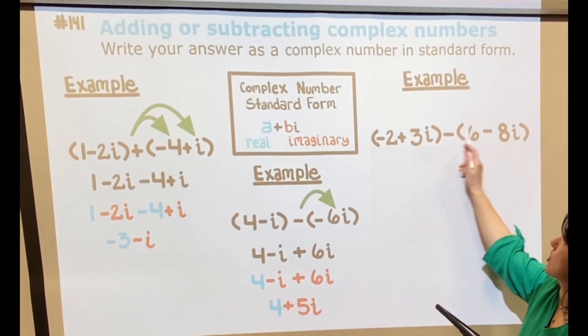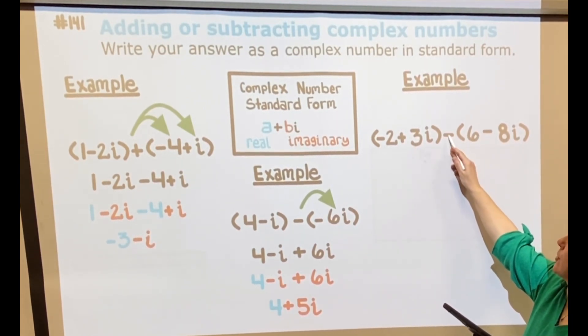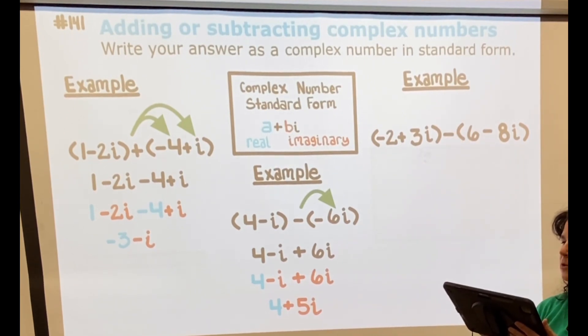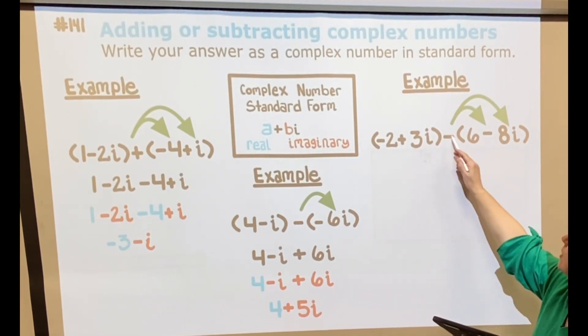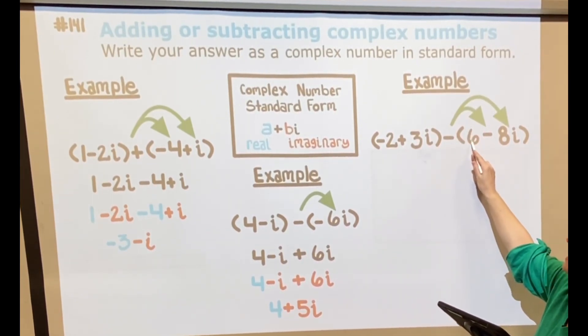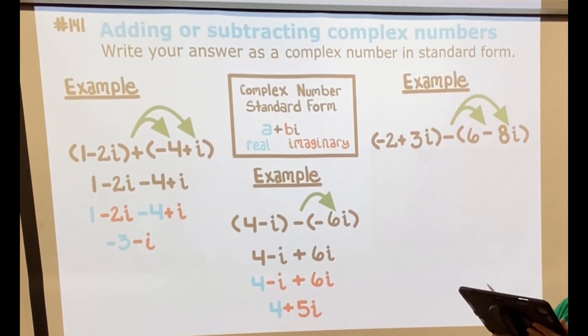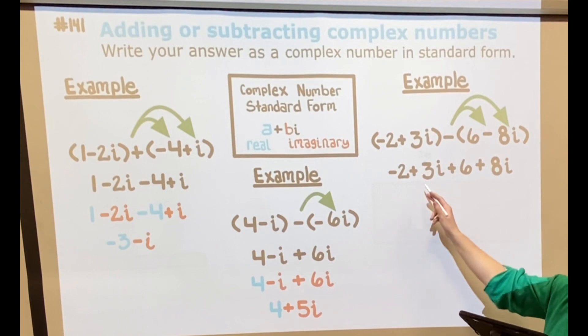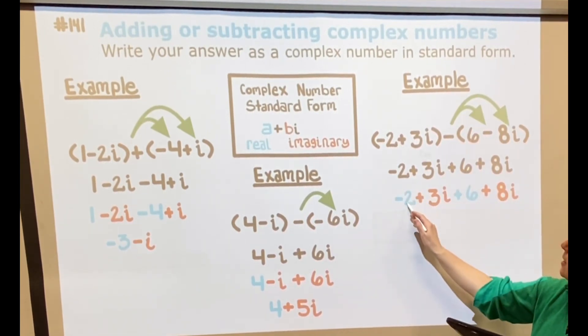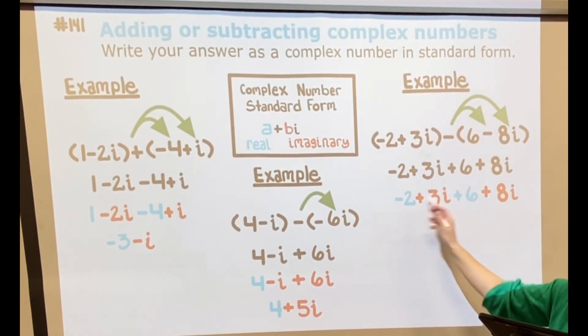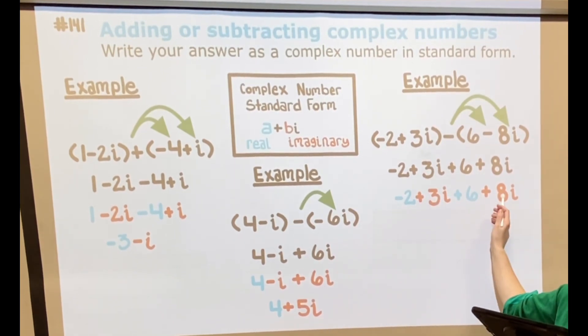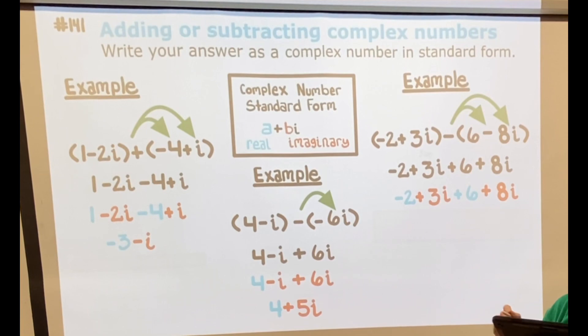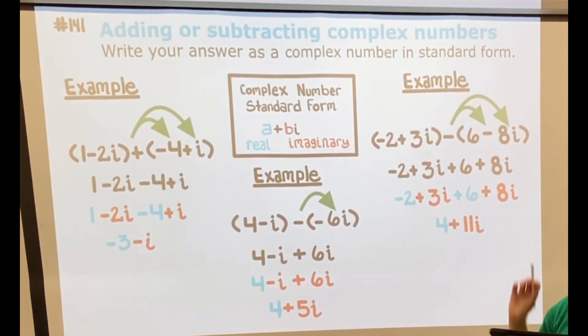So this last one here, I'm subtracting a couple of complex numbers, so this negative needs to get distributed through. So negative positive, it's going to be minus 6, and then negative negative, so plus 8i. Looking for what is alike, so the negative 2 and the positive 6 are like terms—we're going to combine those, and that makes 4. And then 3i plus 8i makes 11i, so I have 4 plus 11i.